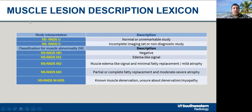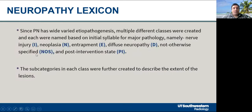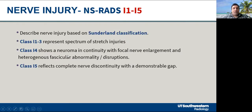We discussed how to describe muscle lesions, which you will find in the paper, and how to categorize neuropathy into different categories: injury, neoplasia, entrapment, diffuse neuropathy, not otherwise specified if the etiology is unclear, and post-intervention state. These were further subcategorized into different categories based on the literature.